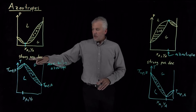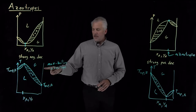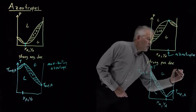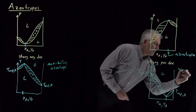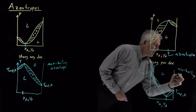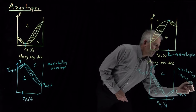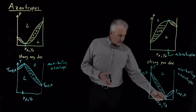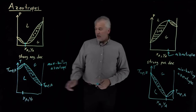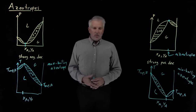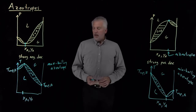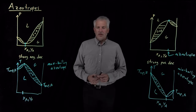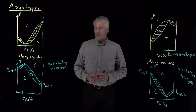If strongly negative deviations result in a max boiling azeotrope, then positive deviations strong enough to form an azeotrope give a minimum boiling azeotrope. The azeotrope describes the particular solution with this special concentration, and it will either have the largest possible boiling point or the smallest possible boiling point. Now let's consider what happens when we distill a system that does have an azeotrope.